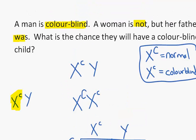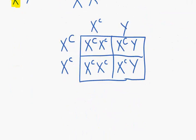We revisit our question: chance they will have a colorblind child. In this case, the individuals that are colorblind are in yellow. The chance of a colorblind child is 50%. This was a fairly simple question.